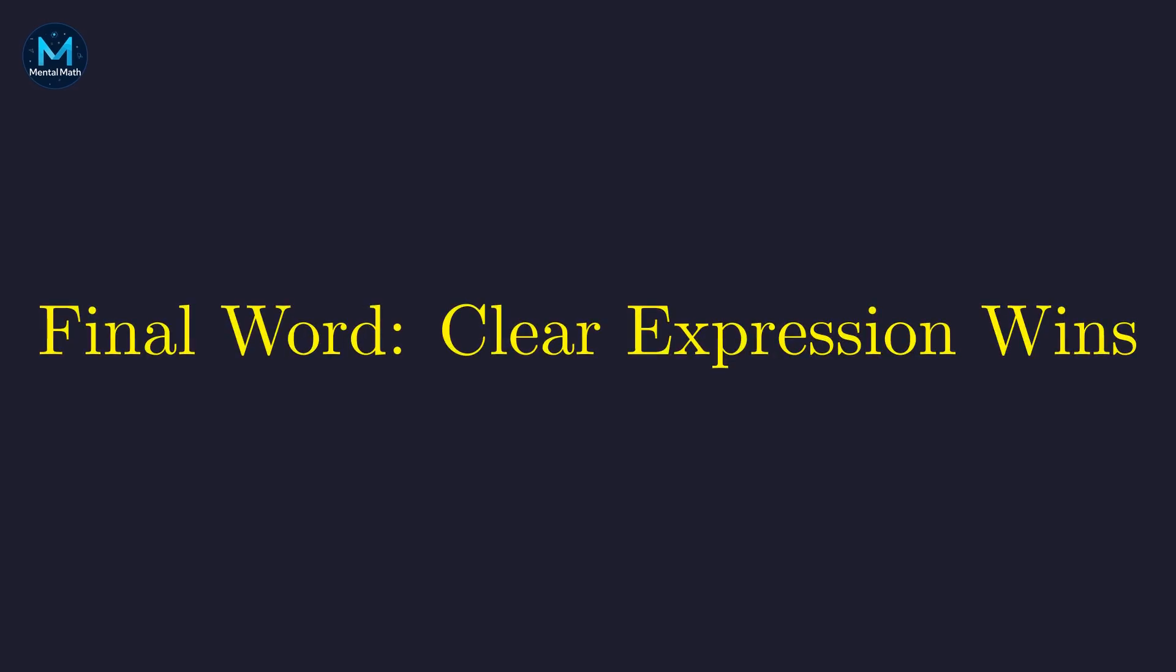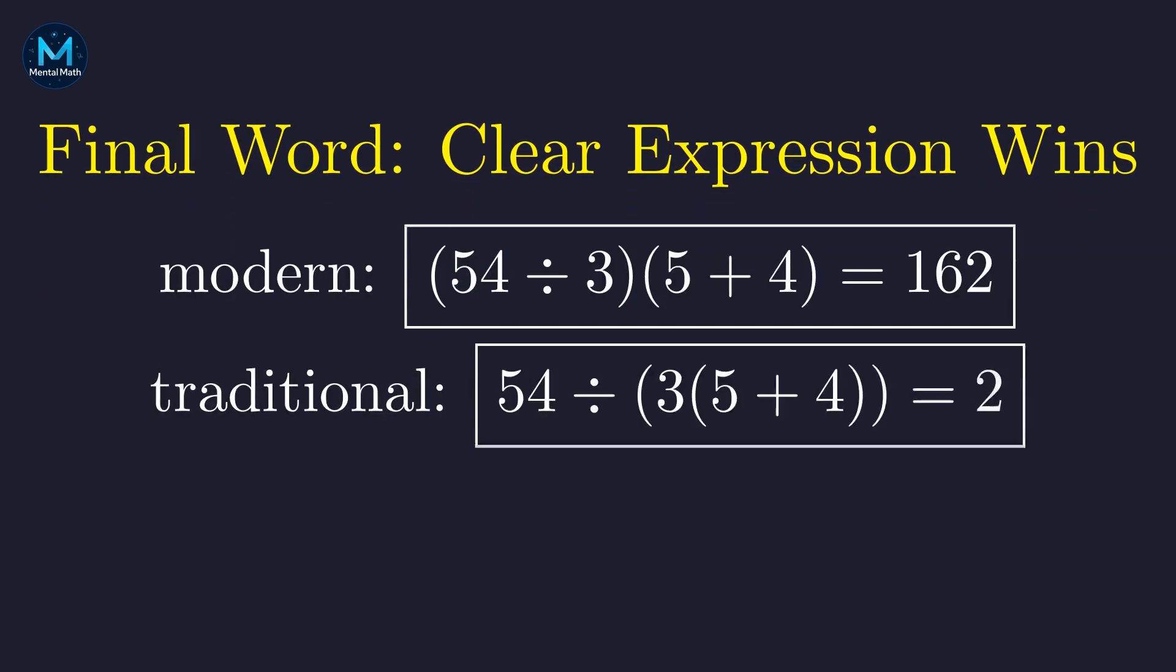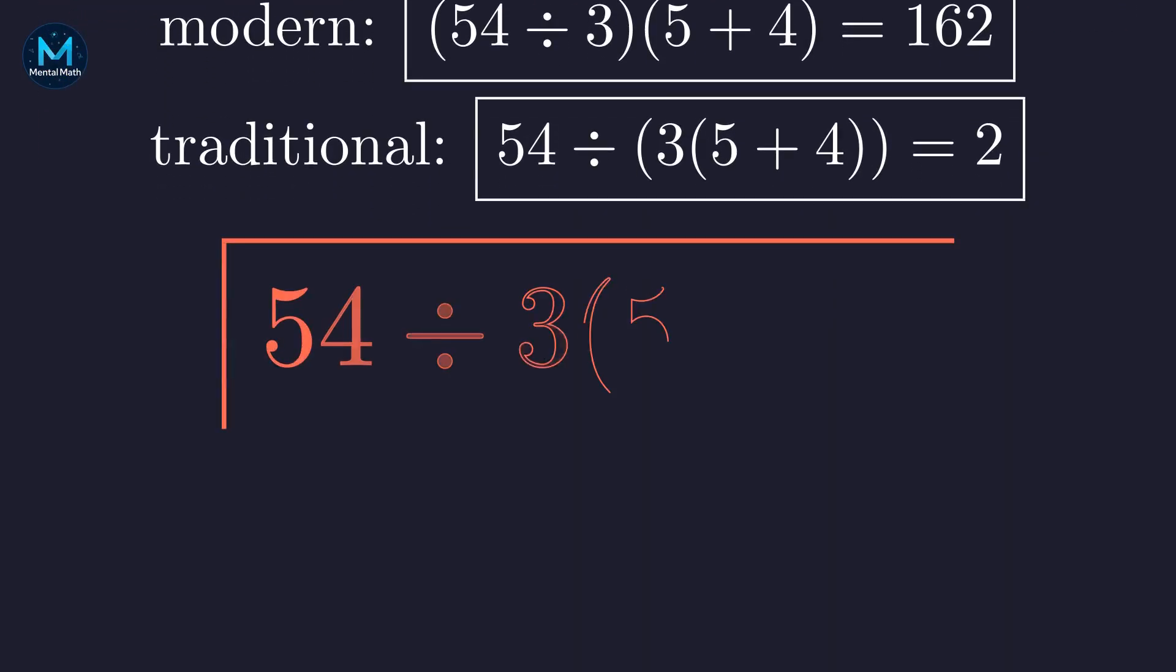The real answer might surprise you. This debate exists because the problem itself is poorly written. We get 162 versus 2. The order of operations gives us 162, but the notation is ambiguous enough that many people read it the other way. Mathematical notation should communicate clearly. This expression doesn't.